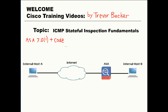Cisco implemented a solution to this in ASA 7 code, and it's referred to as Stateful ICMP Inspection or the ICMP Inspection Engine. The Cisco ASA has the ability to track the state of the ICMP packet exchange process, and the firewall can infer enough information to make the ICMP traffic appear as if it were a stateful protocol.